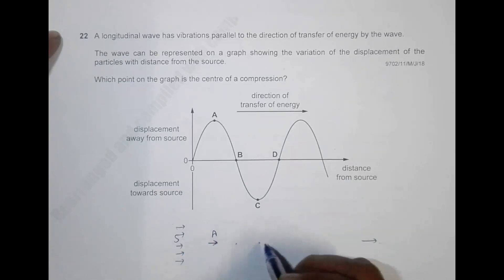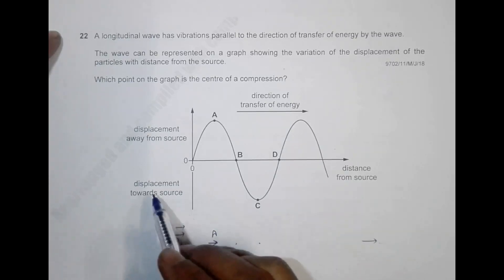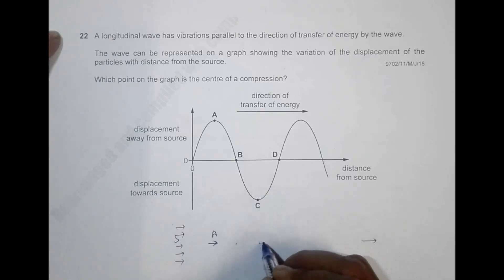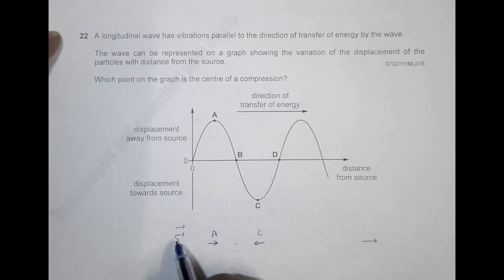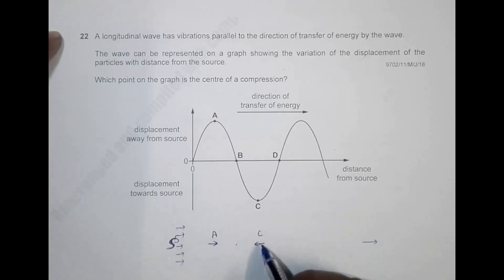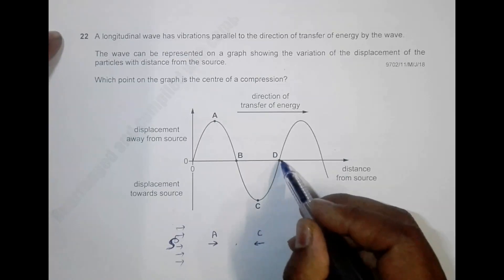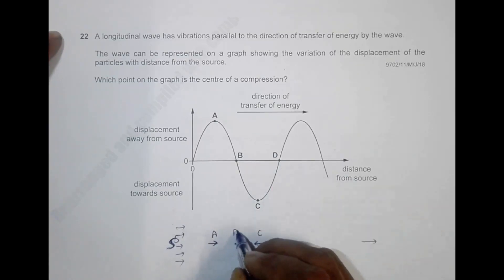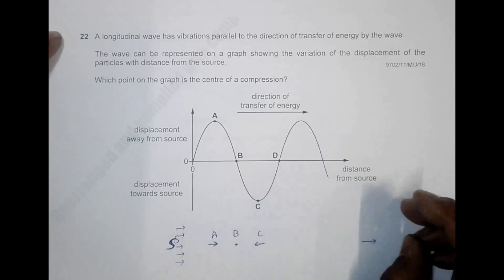For particle C, they are having negative displacement, which means they are displaced towards the source at maximum amplitude. At points B and D, the particles have zero displacement.